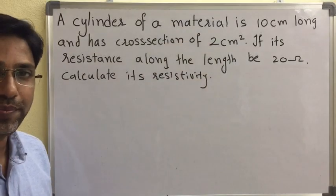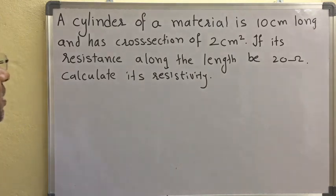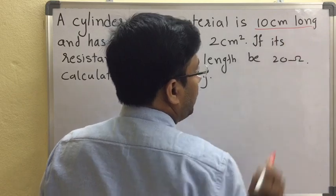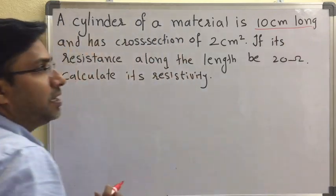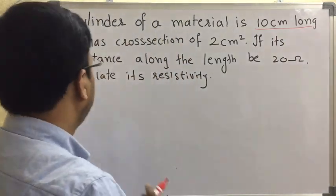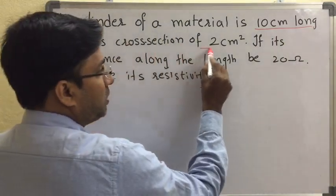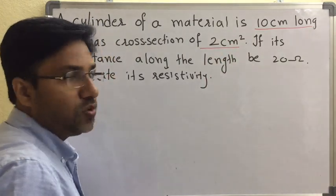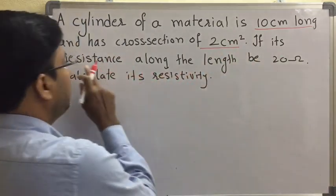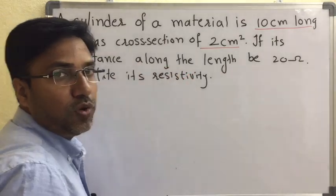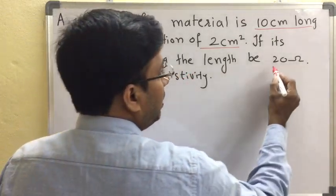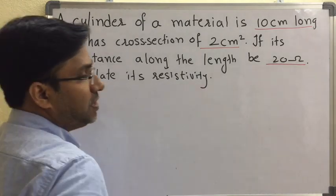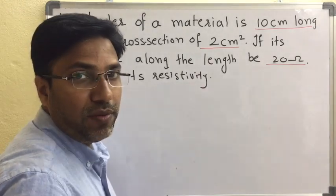Let us solve a problem based on resistivity. A cylinder of material is 10 centimeters long and has a cross section of 2 centimeter square. Its resistance along the length is 20 ohms. Calculate its resistivity.